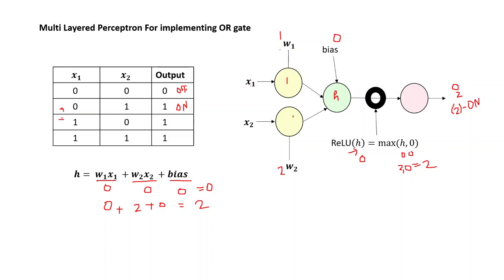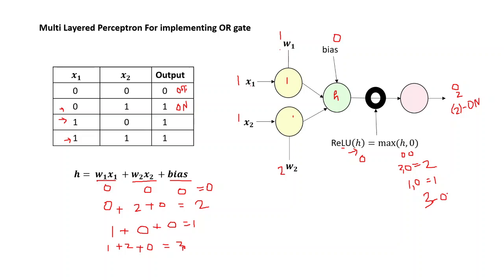Moving on to the next example: W1 times X1 will be one, W2 times X2 will be zero, and bias is zero. Therefore H will be one. Passing through the ReLU function, it will be maximum of one and zero, which is one. Finally, we get into the case where X1 is one and X2 is one. W1 times X1 will be one, W2 times X2 will be two, and the bias is zero. The value of H equals three, and this will output three — again an on state. This is in accordance with what has been shown.